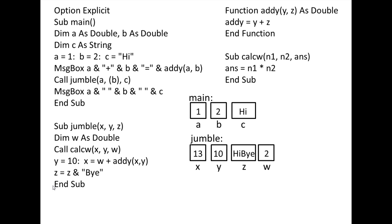The sub procedure Jumble is terminated and we return to main. The values of X, Y, and Z in Jumble have all been updated. However, only A and C in main will be changed. B in main will not be updated with a new value because we passed B by value, not by reference. The value of A will be updated to the new value of X, which is 13. And the value of C in main will be updated to the new value of Z in Jumble, which is HiBy.